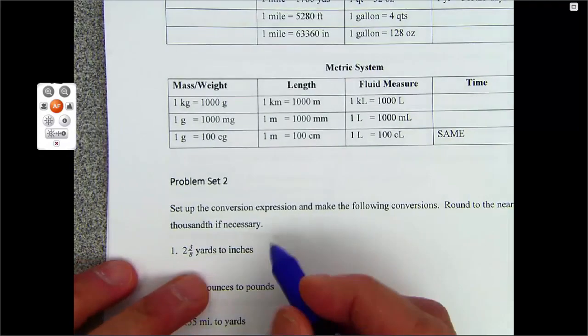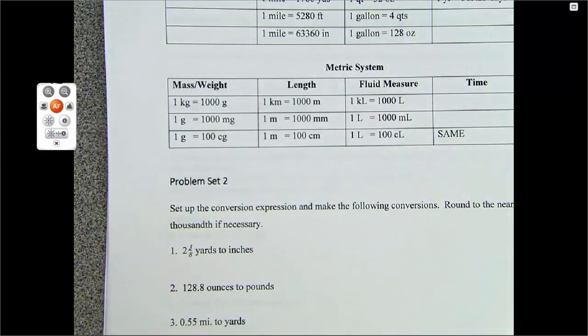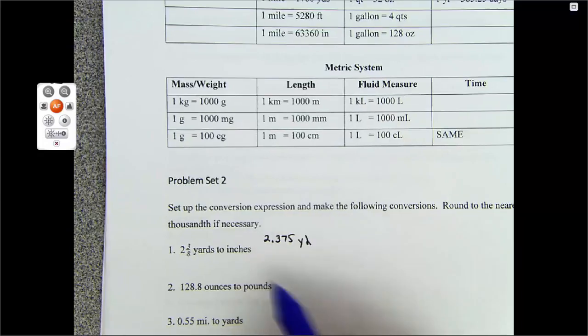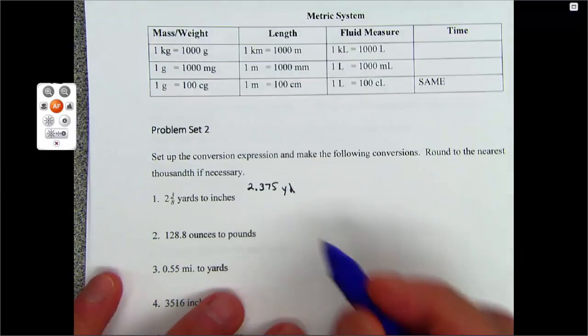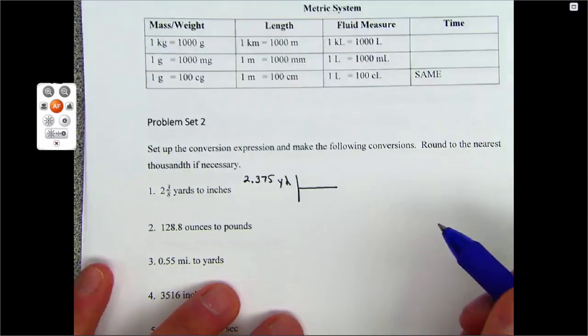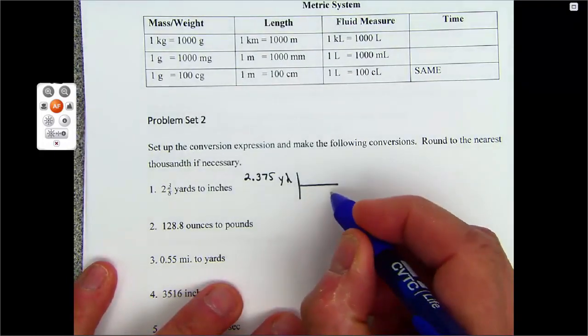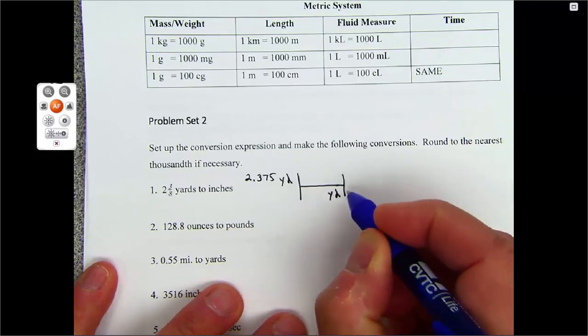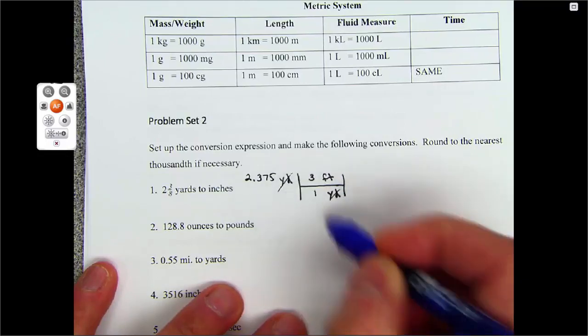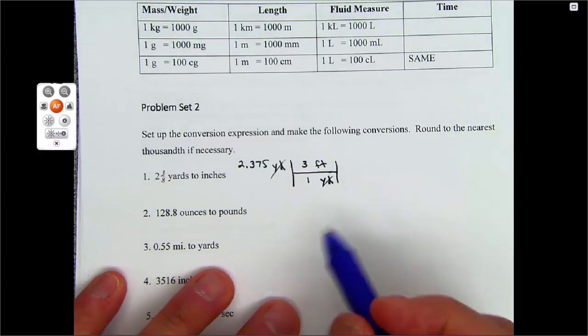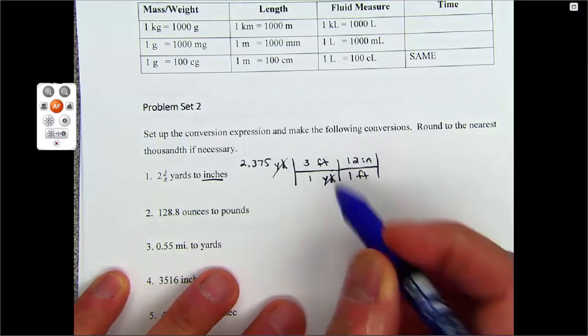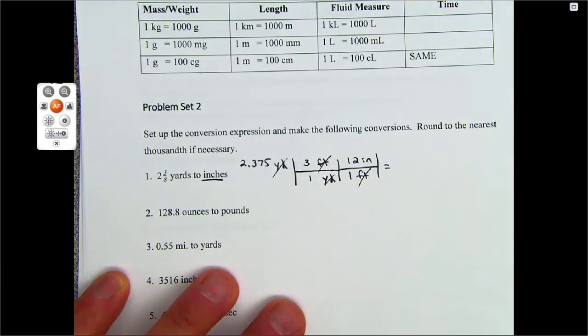We'll do a problem here, problem set two. We have two and three eighths yards. So this is 2.375 yards, and we want to go to inches. When I teach this class face-to-face, I keep track of who does this in one step and who does it in two steps. Yards here, I'm going to put yards down there. Most students do it in two steps. One yard, three feet. But I don't want feet, I want inches. So one foot, twelve inches. And I'm done because I have inches. That's what I'm looking for.